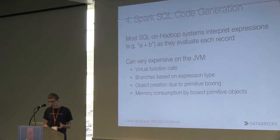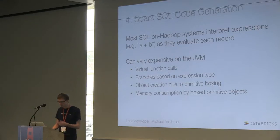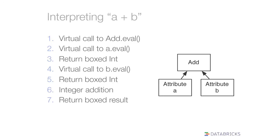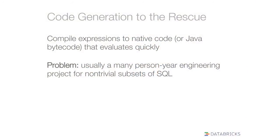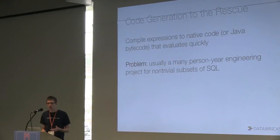As datasets move more to being in memory or on SSDs, the CPU overhead matters. In systems like Hive, CPU overhead didn't matter initially because it was completely disk IO bound. The standard approach in database systems is code generation — you look at these expressions and compile them to native code or, on the JVM, to Java bytecode, and then evaluate them quickly. But implementing code generation from scratch is usually a many-person, many-year engineering effort for a big subset of SQL. We needed to do it from scratch because we deal with a lot of interesting data types and functions not in standard SQL systems — like letting you take Scala objects as input, registering functions from Scala into SQL, and handling data types like structures and maps for JSON data.